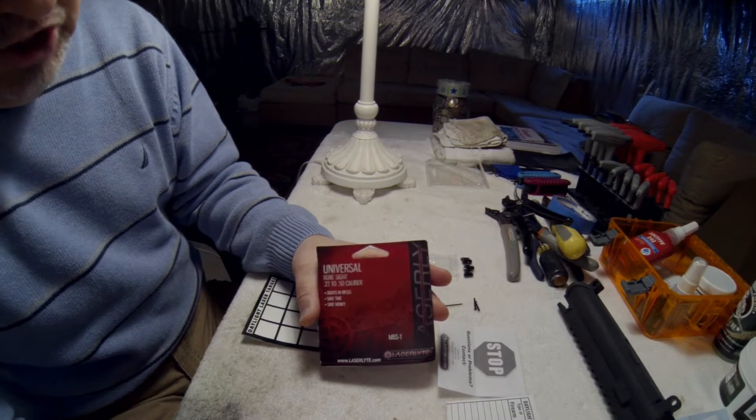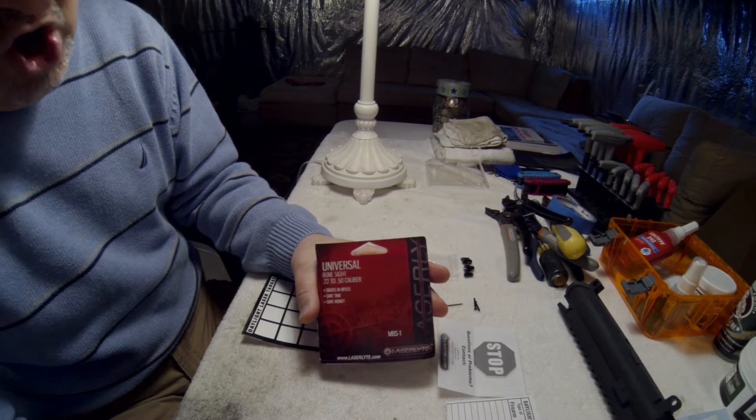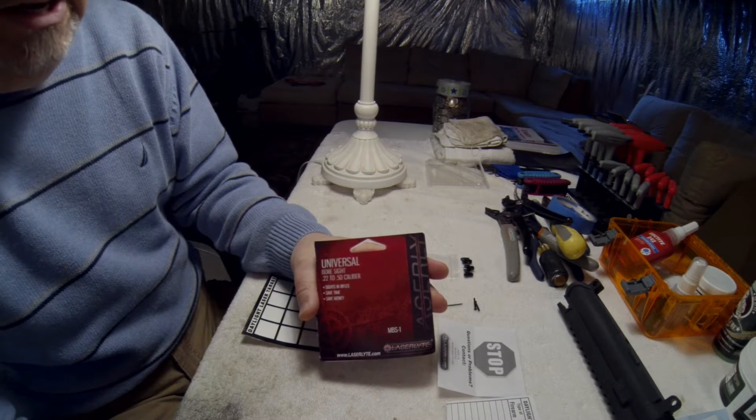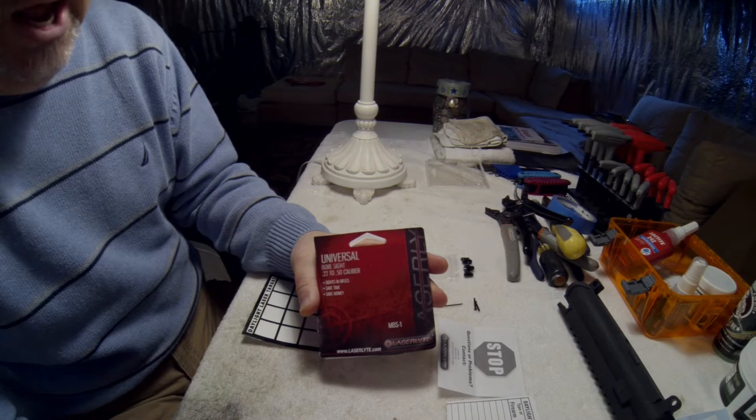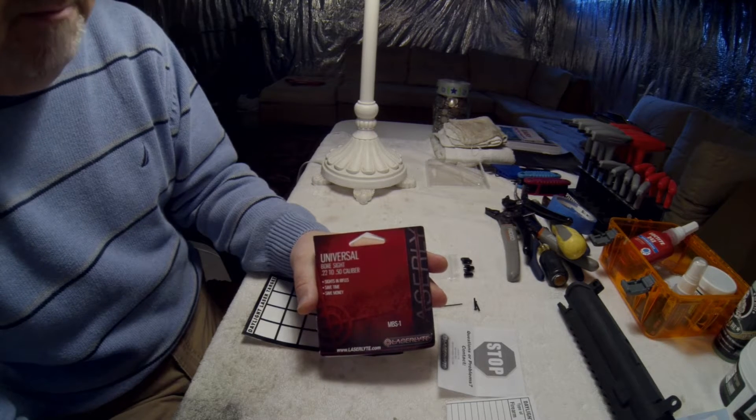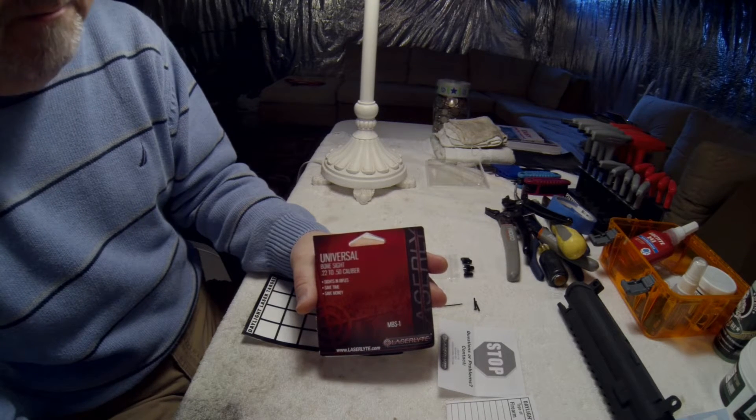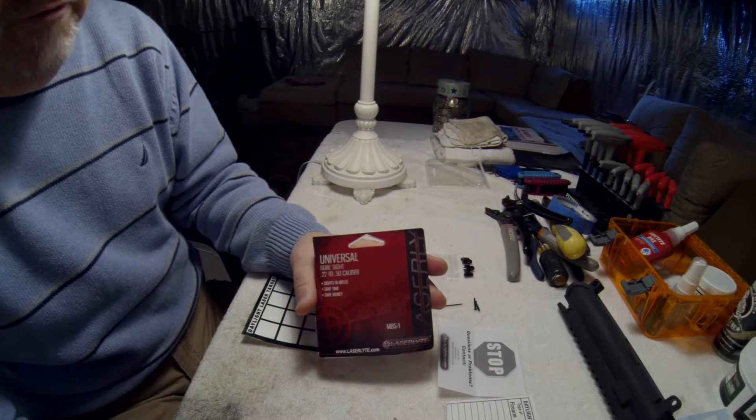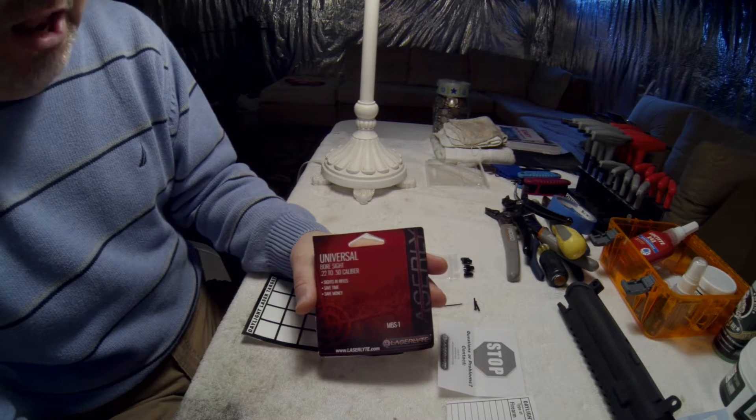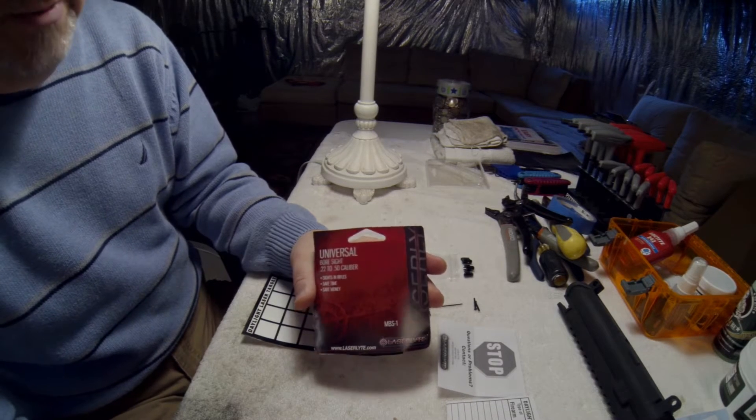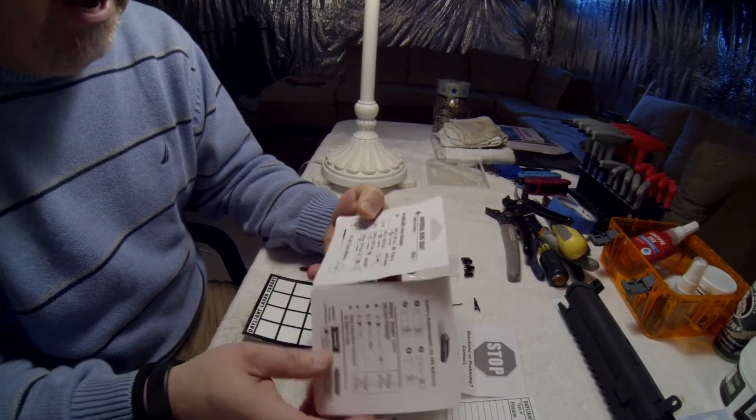This is made by a company called LaserLite, L-A-S-E-R-L-Y-T-E dot com, LaserLite dot com. It's called the M-B-S-1, Universal Boresight, 22 caliber to 50 caliber. It's quite a neat little device here, guys.